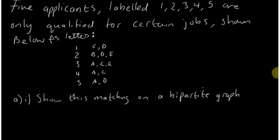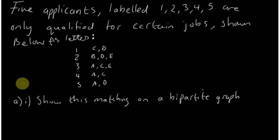We'll start by answering a typical D1 decision maths question. We have five applicants labeled 1, 2, 3, 4, 5, and they are only qualified for certain jobs represented as letters.